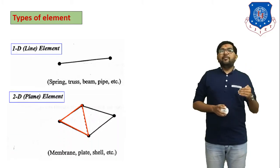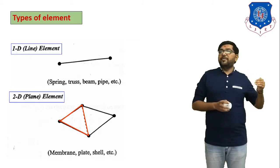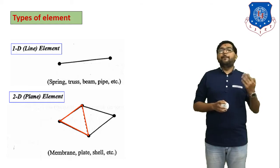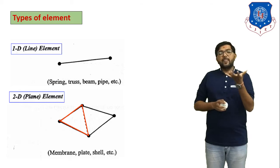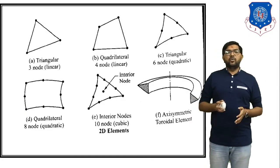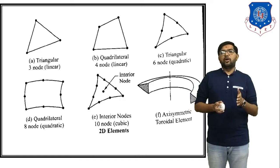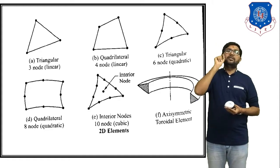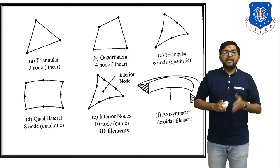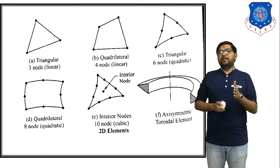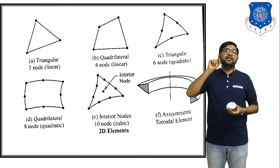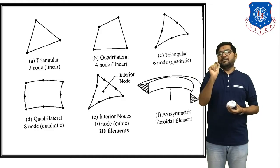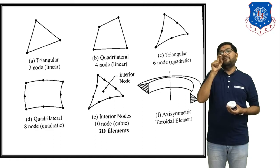The second type is the two-dimensional element, also called a 2D plane element. Several types are available: membrane, plane, and shell. As shown in the figure, a 2D plane element has a total of 4 nodes. Figure A shows a triangular 3-node element — a triangle with 3 black nodes. Figure B shows a quadrilateral 4-node linear element — a linear type element with 4 nodes and 4 elements, since any element is interconnected with 2 nodes.